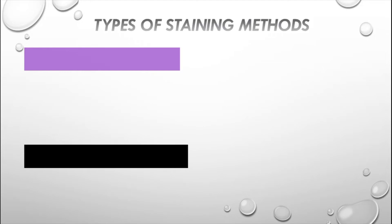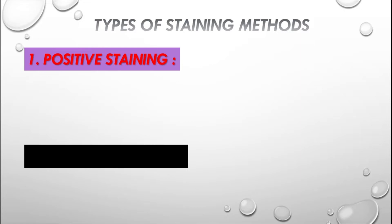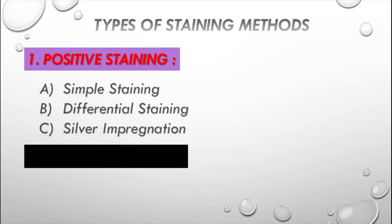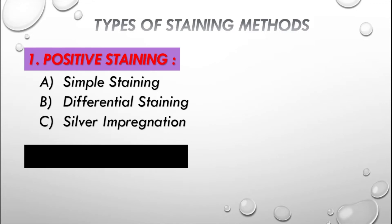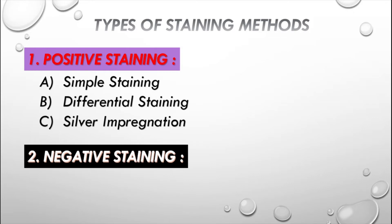Now let us see the different types of staining methods particularly used in bacteriology to stain bacteria. The first category is positive staining, which includes subtypes: simple staining, differential staining, and the silver impregnation method. It is called positive staining because the cell takes on the color of the stain. The second category is negative staining, where the cell remains colorless but the background is dark — that is why it is termed negative staining.